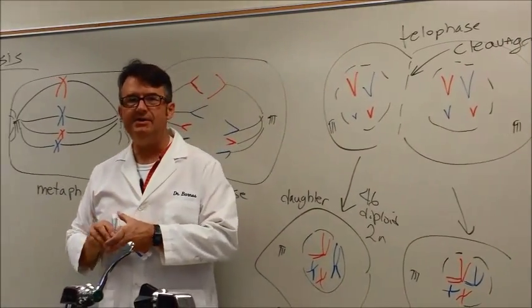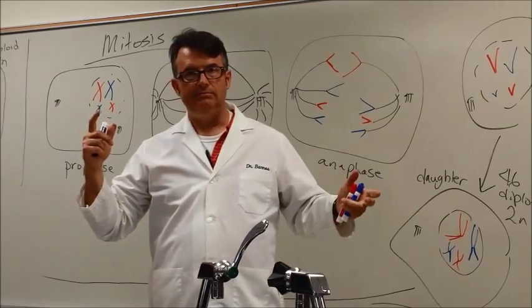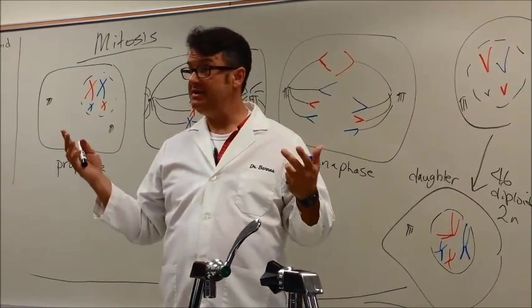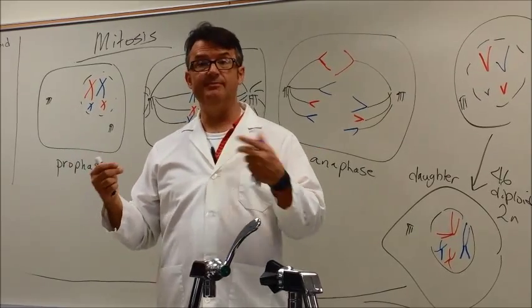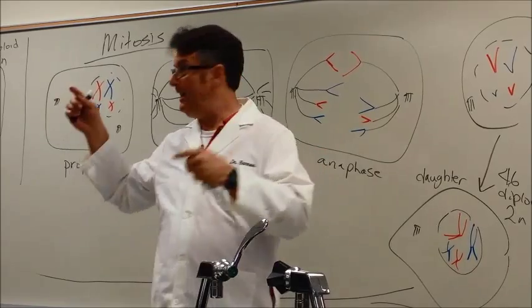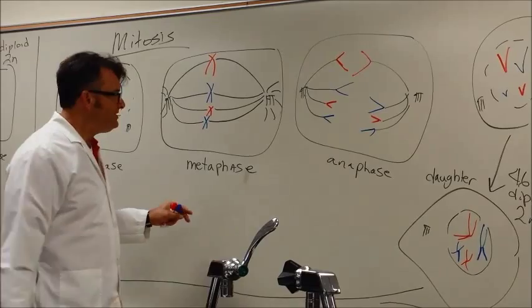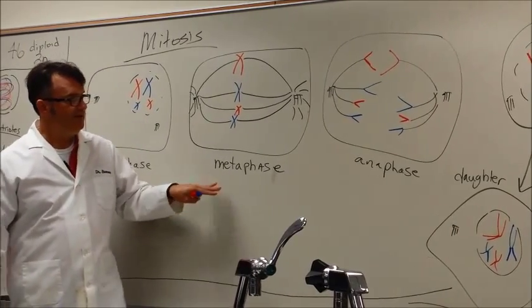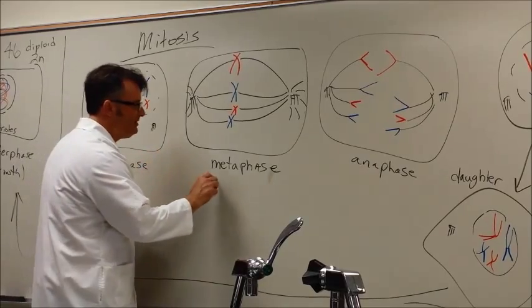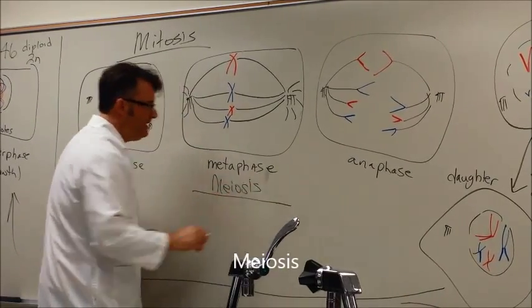Now I want to take you from mitosis, which is skin, hair, nails, gut, bone, that kind of division, and I want to talk about sex cell stuff. I want to talk about sperms and eggs for just a few minutes and show you how that's different, how this process is a little bit different. I can basically tell you the story by just redoing metaphase and anaphase. So I'm going to talk about meiosis next.